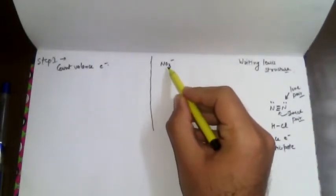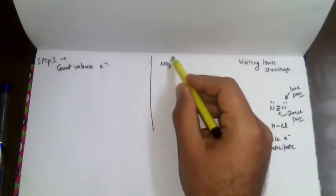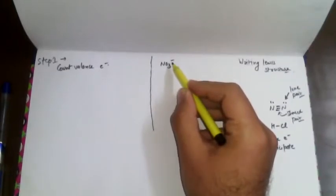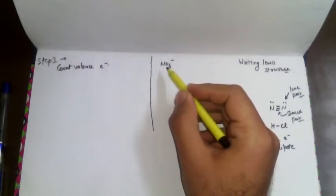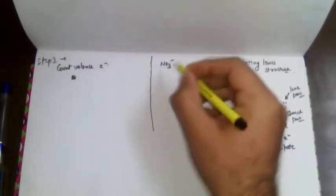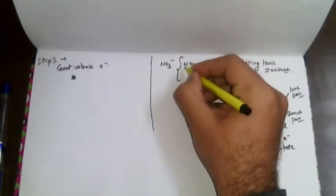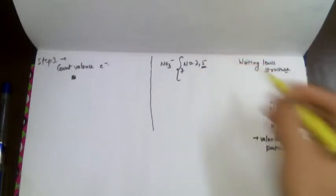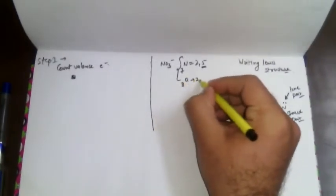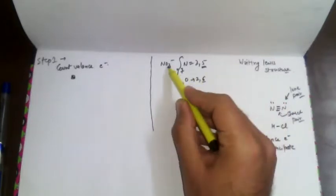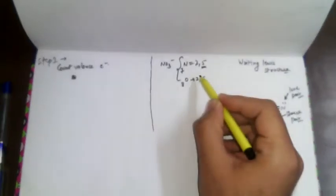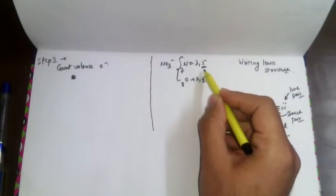For example, in the molecule NO3 minus, how many atoms are involved? Overall four atoms: three oxygen and one nitrogen. For nitrogen, the electronic configuration is atomic number 7, giving 2,5 — so five electrons are valence electrons. Oxygen has atomic number 8, giving 2,6 — six valence electrons. With three oxygens, that is 6×3 = 18 electrons from oxygen, plus 5 from nitrogen.